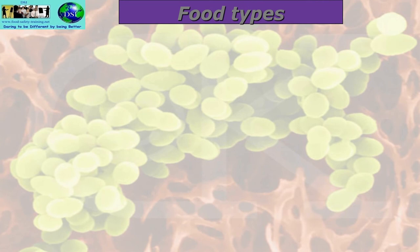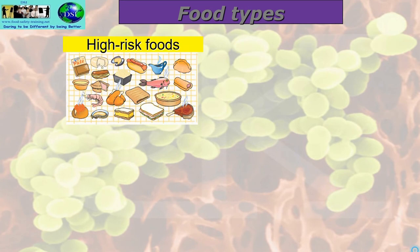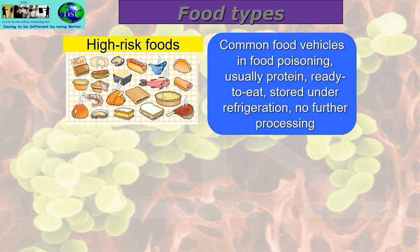Let's look at food types. High risk foods are common vehicles in food poisoning — usually made of protein, ready to eat, stored under refrigeration and requiring no further processing. Examples found in a deli or supermarket fridge include cooked ham, cakes, cold prawns, pork pie, and pâtés — essentially anything that contains protein and is usually kept in a fridge.